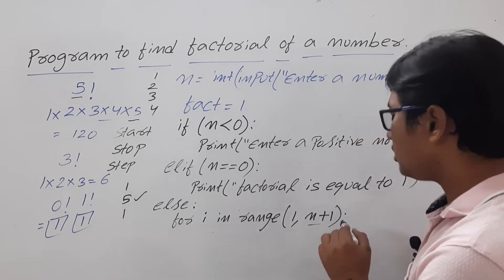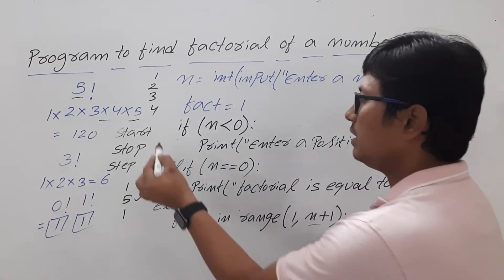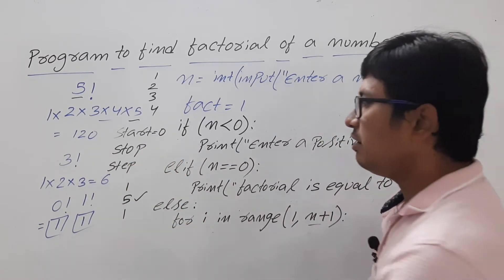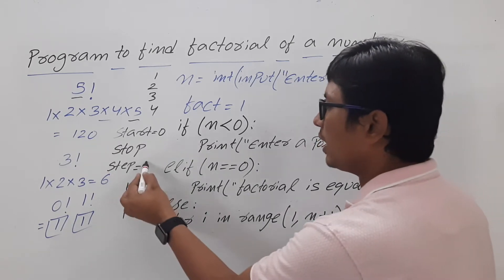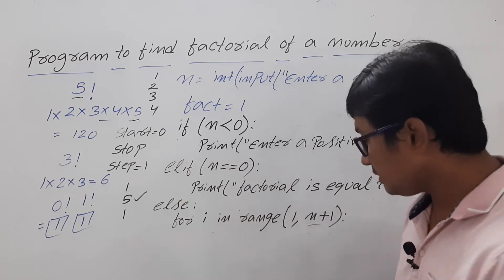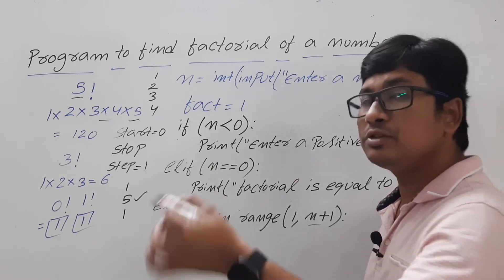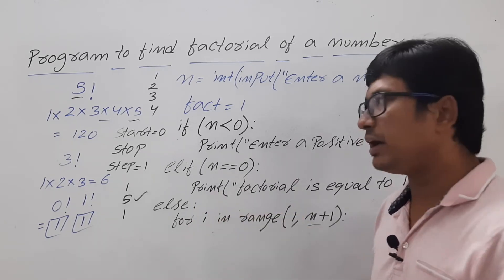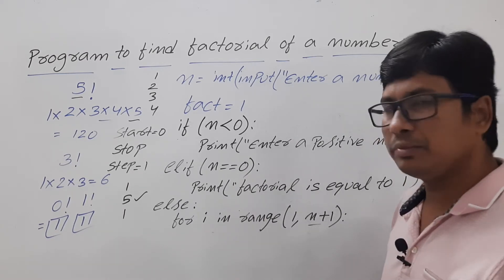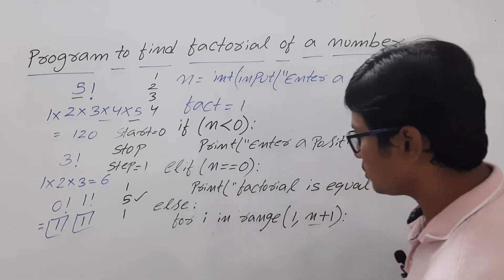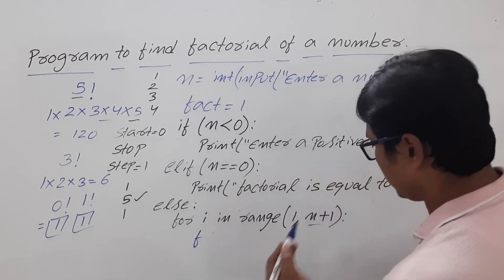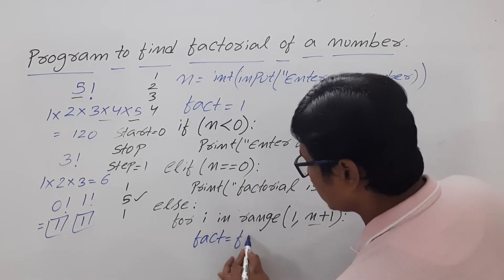You may ask why I didn't specify the step. In range(), if you don't specify start, it defaults to 0, and if you don't specify step, it defaults to 1. If start is 0, then 0 multiplied by something gives 0, so that's why I set start to 1. So: for i in range(1, n+1), fact = fact * i.